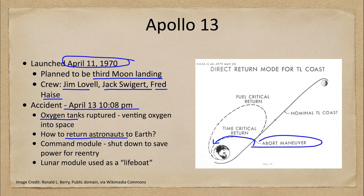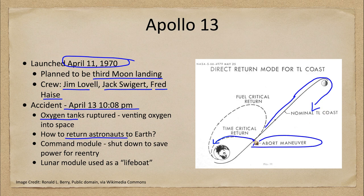So the safest thing to do was just to keep it going — keep it heading toward the moon, loop around the moon, and use the moon's gravity to bring it back to earth. And this is what was done.